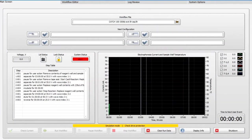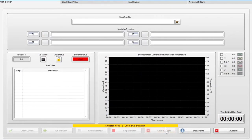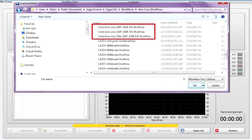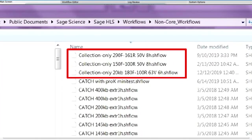On the software main screen, if necessary, press the clear run data button to clear all fields from a previous run. A new run cannot be initiated until all fields are cleared. In the workflow file field, press the load workflow icon and open the non-core workflows folder. Then select the collection only 20 KB 180F 100R 63V 6-hour workflow file.